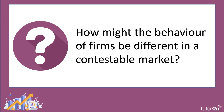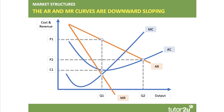So how might the behaviour of firms be different in a contestable market? Let's take a look at the basic analysis diagram, which would be super useful in a contestable markets question. This looks very much like a monopoly diagram. We have a downward sloping demand curve and U-shaped cost curves. That's true in a contestable market because firms are selling differentiated products, so the demand curve will slope downwards. And if average revenue is falling, then so too must the marginal revenue curve shown in the diagram.